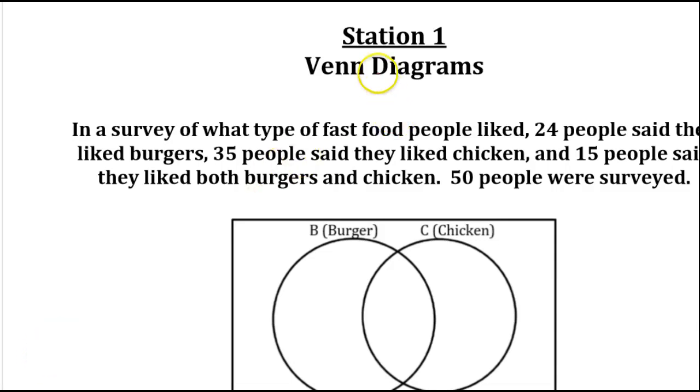In this video, we will practice making Venn diagrams and using set notation. Now, if you see this symbol, remember that this means AND. It might help you remember if you keep in mind that you could make an A out of this. A for AND.